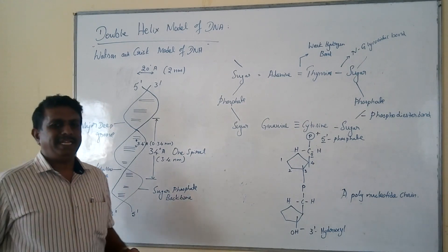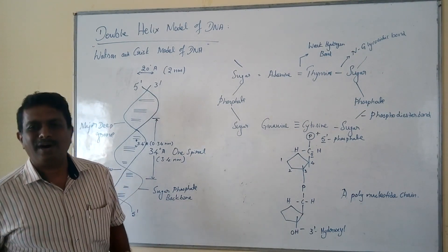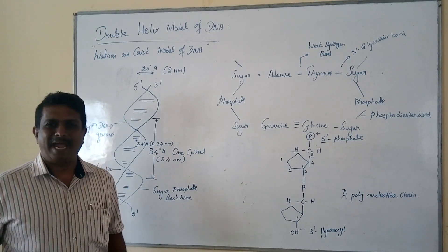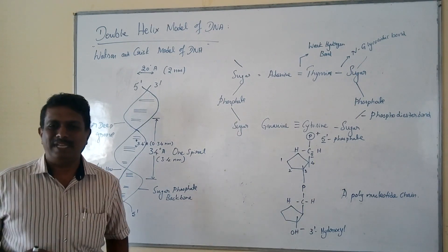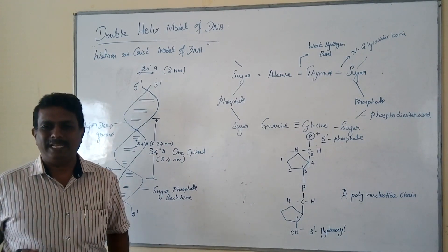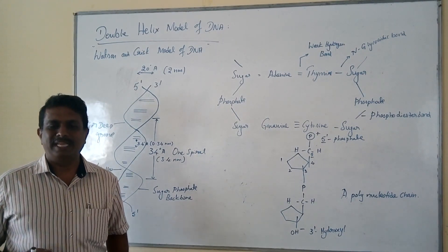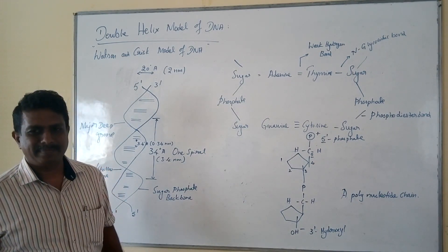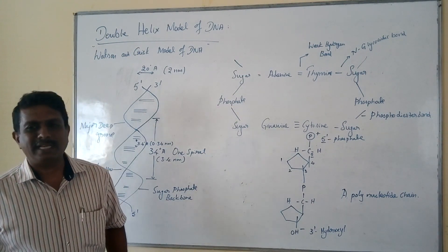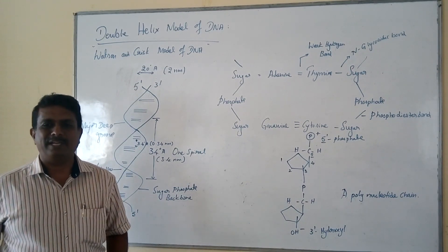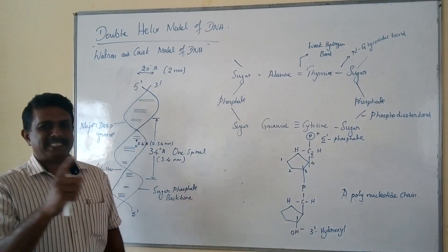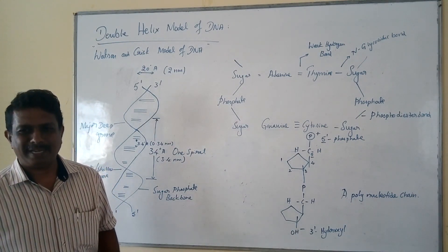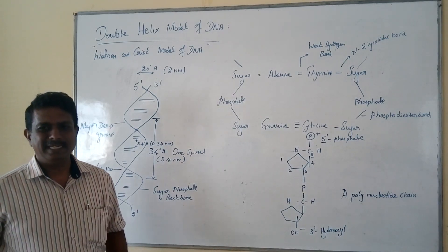The double helix model of DNA was proposed by J.D. Watson and F.H.C. Crick in the year 1952. This model was mainly based on the X-ray diffraction studies and crystallographic data made by two pioneer scientists, namely Wilkins and Rosalind Franklin. For this outstanding contribution, Watson, Crick, and Wilkins were awarded the prestigious Nobel Prize in the year 1962.